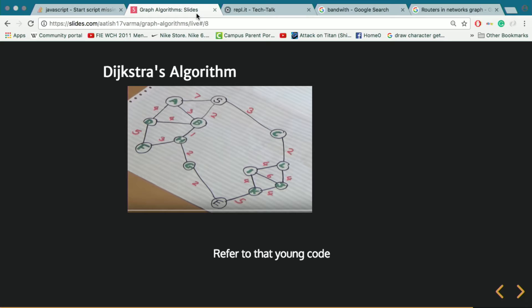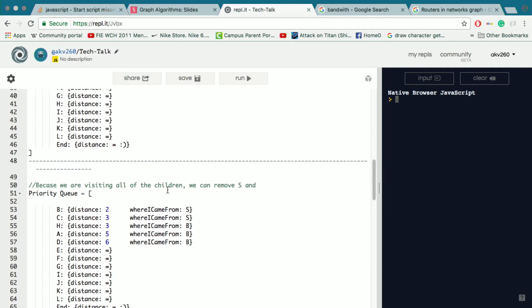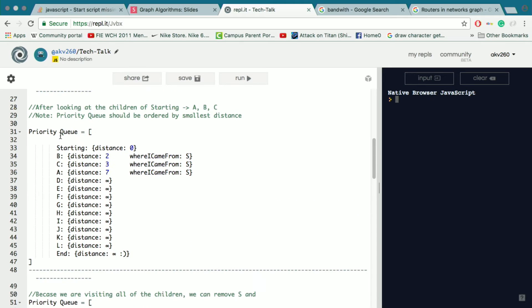So we've now exploited all of the starting point's nodes. So we can take that starting node and remove it from this priority queue and add it to a finished node stack, which is just going to be a stack of all the nodes we've exploited their children of.